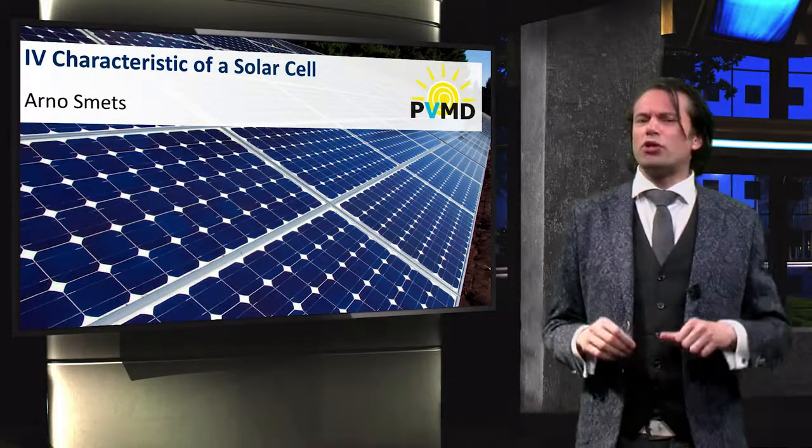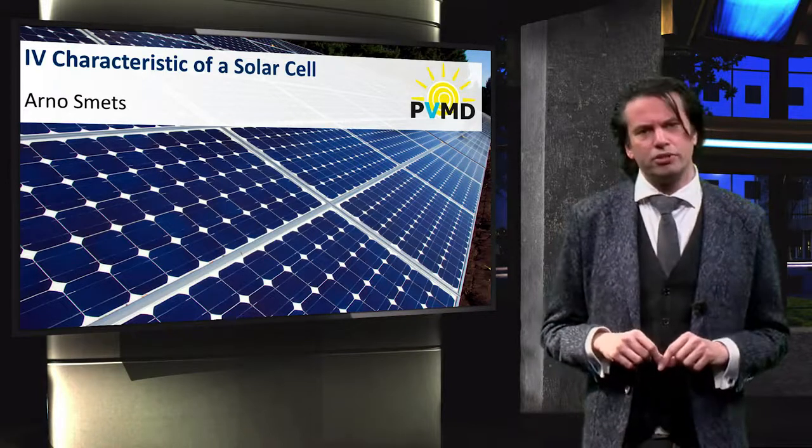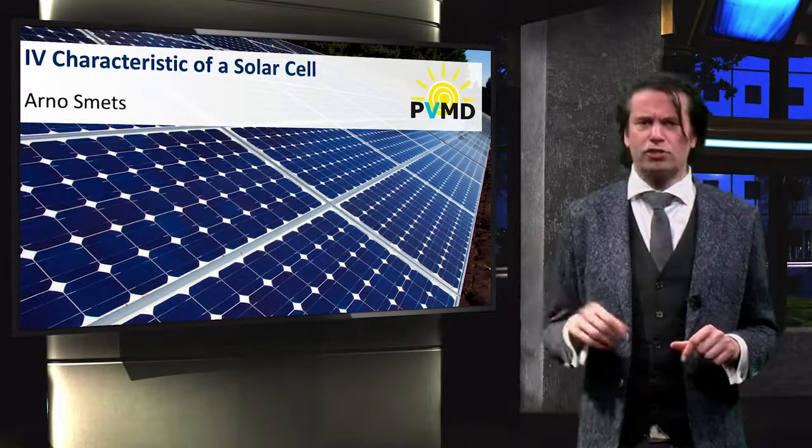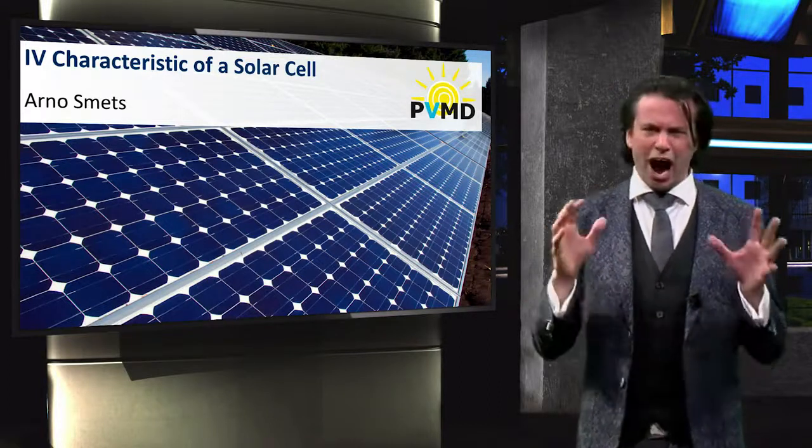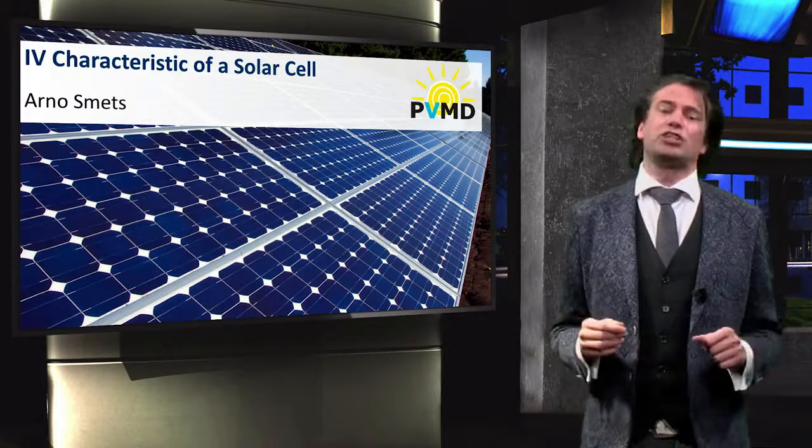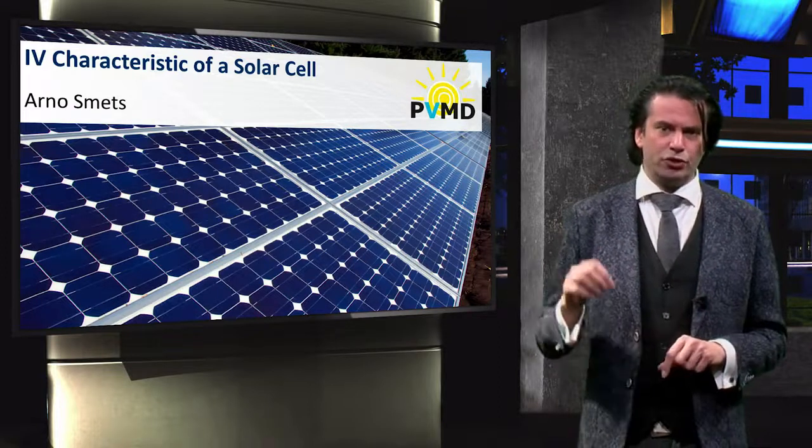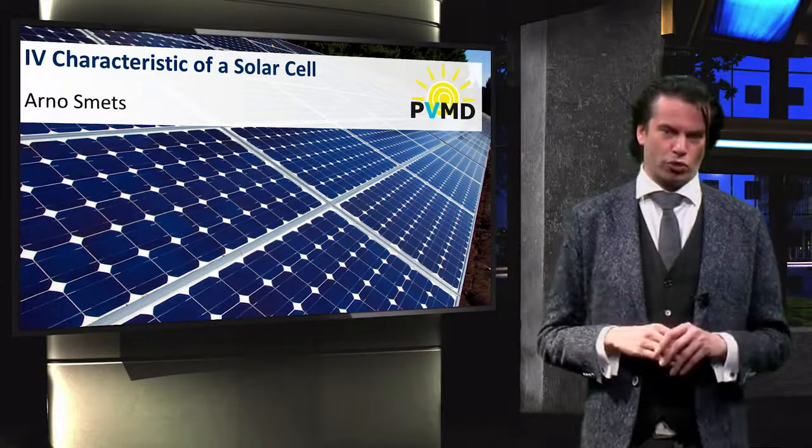In the next few weeks we will go deep into all the operating principles of solar cells. We will discuss the semiconductor physics and optics governing their behavior, and you will really get a sense of how solar cells work. But let's start by trying to understand an important aspect of any electrical component, the current voltage or IV characteristics of the solar cell.